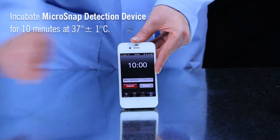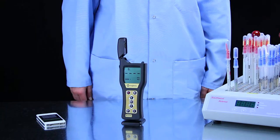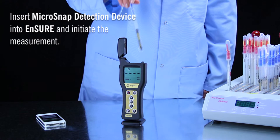Using the Ensure luminometer, select the product or location that is being tested. Insert the MicroSnap detection device into the read chamber. Close the lid and press OK to initiate measurement. Results will be displayed in 15 seconds.